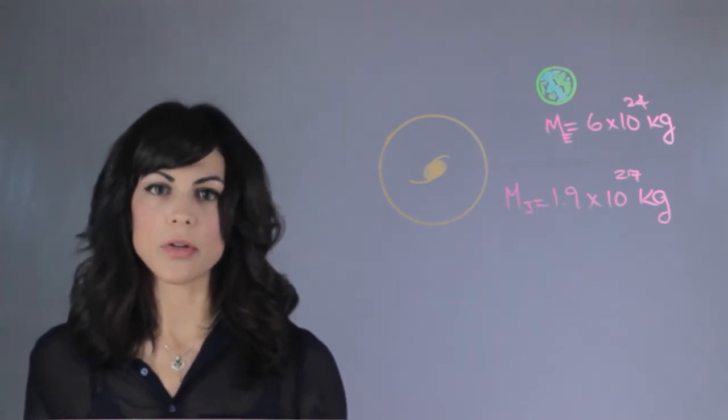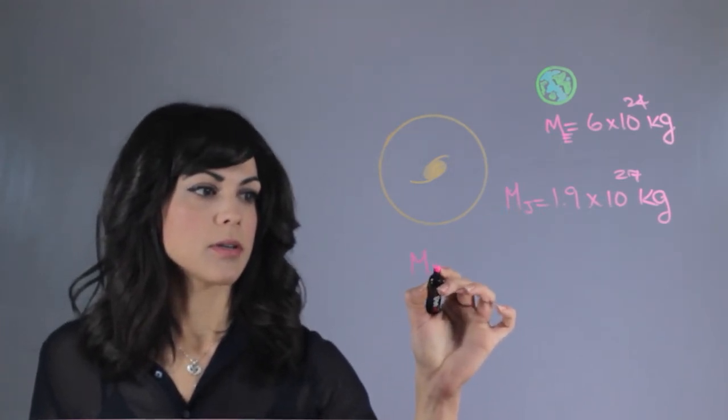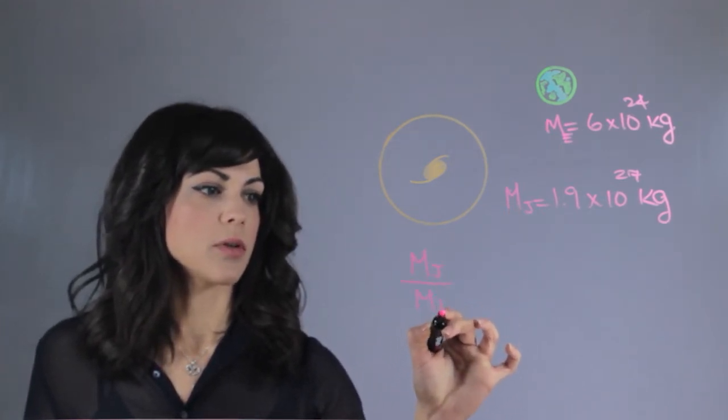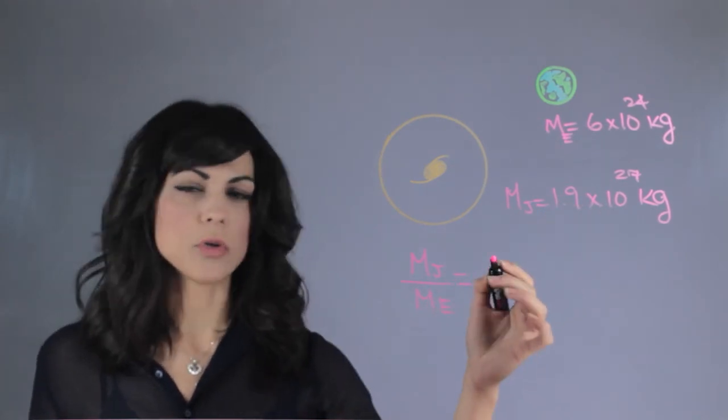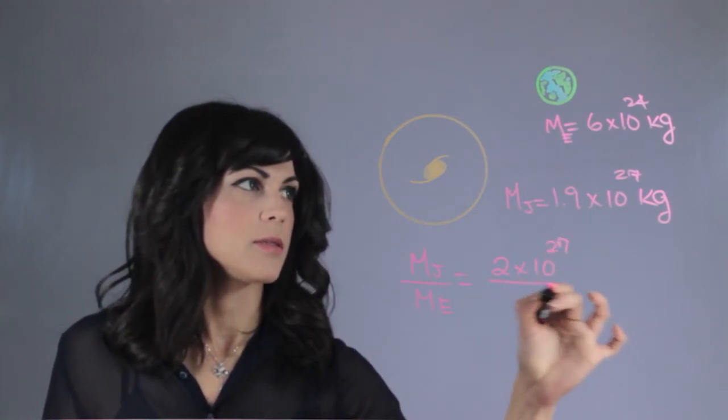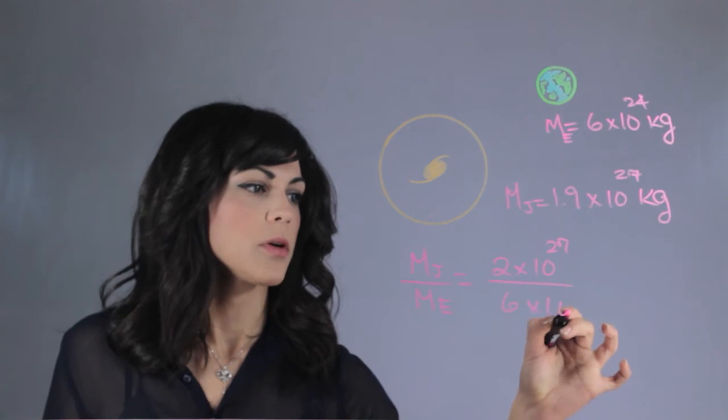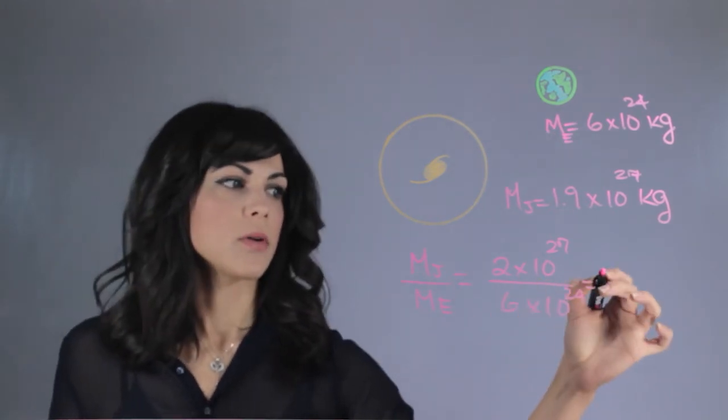So exactly how much bigger than Earth is it? So if we divide the mass of Jupiter by the mass of the Earth, we see we can round this off to 2 since the number is so big. Divide it by 6 times 10 to the 24th. And we can tell that this is about 300.